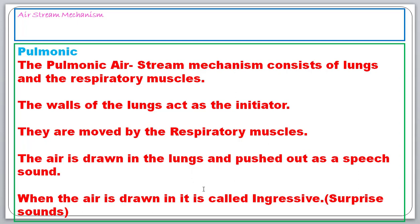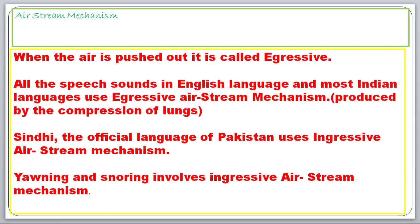The respiratory muscles of the lungs act as an initiator and push out the air to produce speech sound. When the air is drawn in, we call it ingressive airstream mechanism — for example, when we say 'ah', the air gets in, so it is called ingressive airstream mechanism. When the same air which gets into the lungs is pushed out to produce speech sounds, we call it egressive airstream mechanism.